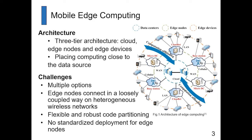Let's take a look at Figure 1, which shows the architecture of edge computing. In that architecture, it has three tiers: cloud, edge nodes, and edge devices. In the edge computing network, we want to place computing close to the data source so we can get a more efficient network.